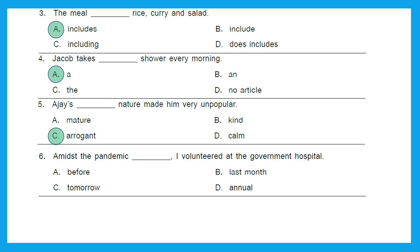Question 6: 'Amidst the pandemic dash, I volunteer at the government hospital.' Options are: before, last month, tomorrow, or annual. The right answer here should be option B, last month: 'Amidst the pandemic last month, I volunteer at the government hospital.'